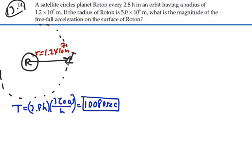If we know the period and we know the radius of the orbit of the satellite, we can calculate the mass of the central body. In this case, we can calculate the mass of planet Roton by using Kepler's third law. In Kepler's third law, the period squared is equal to 4 pi squared over g times the mass of the central body, the mass of planet Roton